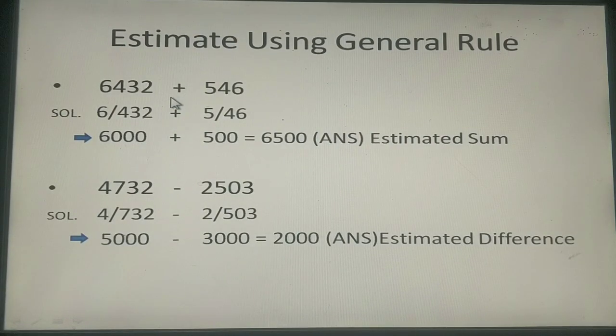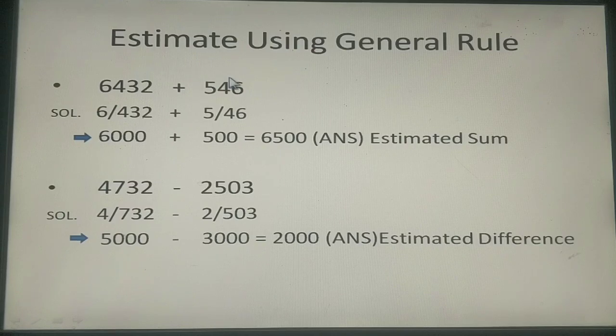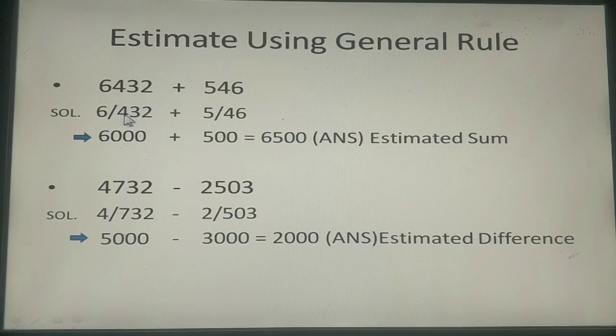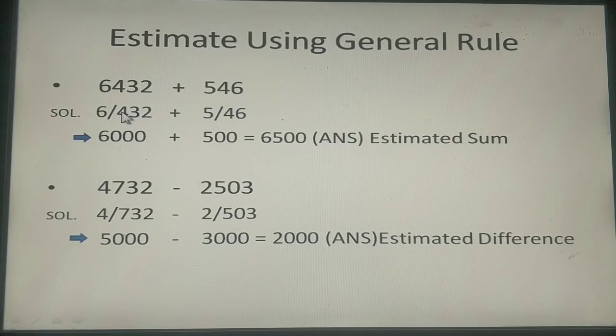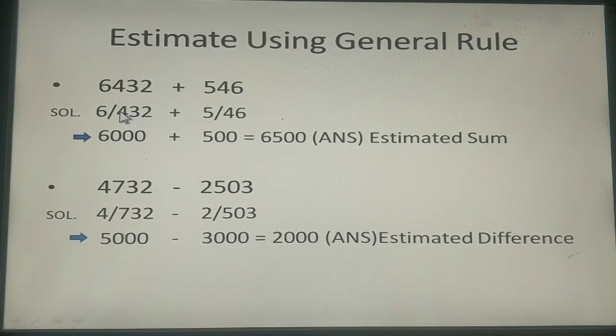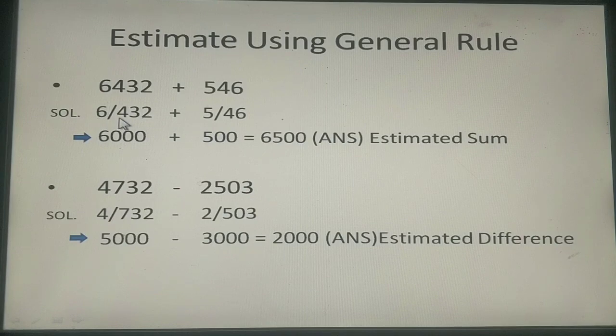Here are some examples for you children. The question says that you have to estimate the operations, the solutions for the operations using general rule. The first example for you here is 6432 plus 546. So here one trick that I would teach you here is that I want you to put a slash with your pencil or your blue pen here. And a slash here. So now what you have to understand is that the last 3 digits that is the digits after the slash are definitely going to become 0.